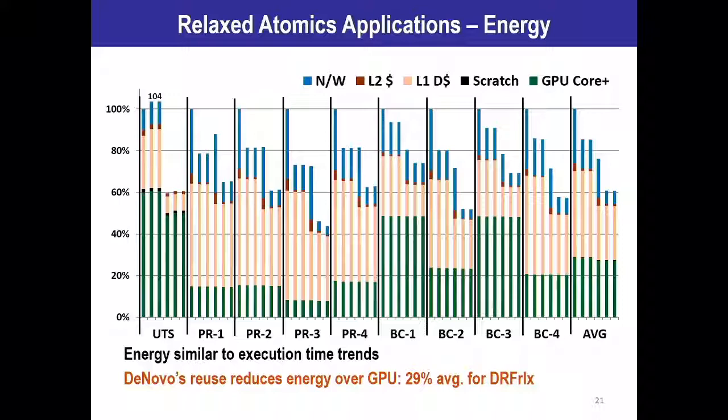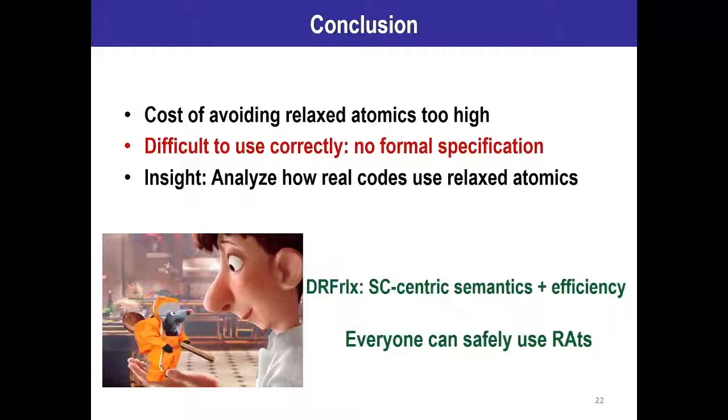To conclude, what I've talked about today is how relaxed atomics can provide significant benefits to the programmer, but in heterogeneous systems with relatively simple coherence protocols, the cost of avoiding them is just too high — despite the issues with reasoning and using them correctly that exist in modern languages due to the lack of a formal specification. Our key insight was to analyze how real code uses relaxed atomics and then introduce a new memory consistency model, DRF-Relax, that provides SC-centric semantics and efficiency for all of those use cases while building on existing approaches. The net result is that we can put a hazmat suit around our rat so that everyone can use them safely. Thank you for listening — I'm happy to answer any questions.